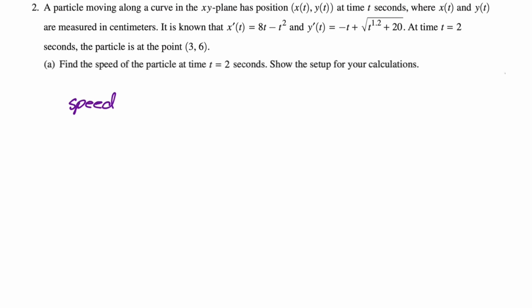It doesn't ask for the units on this, so we do not need to put units. But it would be centimeters per second if it said include units. It's going to be the square root of x'(2)² + y'(2)². When you're doing this, you want to memorize how to find speed, distance traveled, acceleration, velocity vectors. There's a lot of things that you need, but speed is definitely one of them. It's the magnitude of the velocity vector and the velocity vector is x' comma y'.